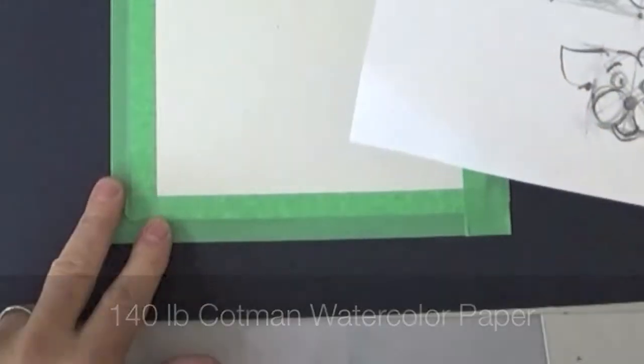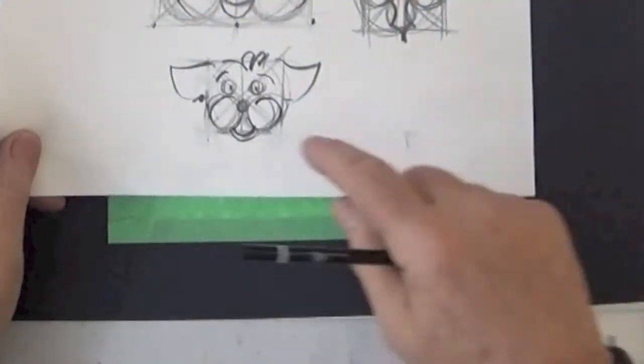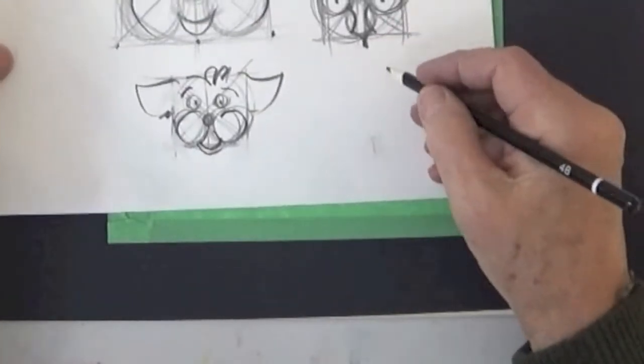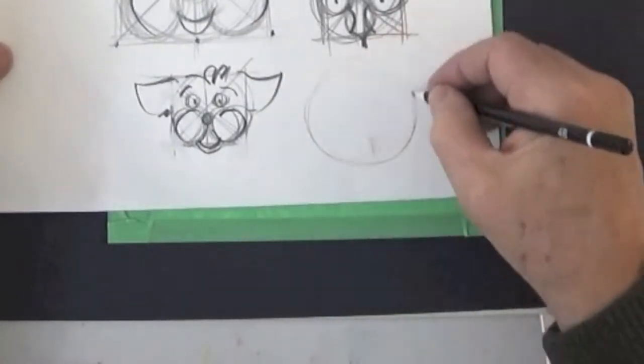Another piece of that English watercolor paper. I'm liking this little puppy. Let's just show you the steps quickly.